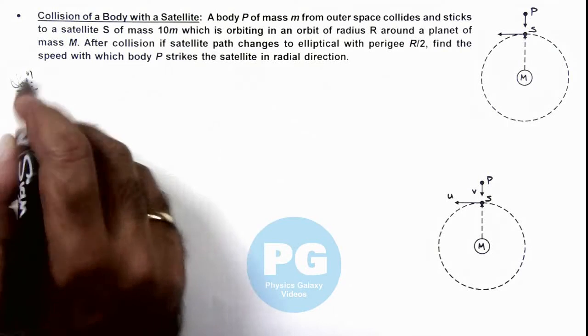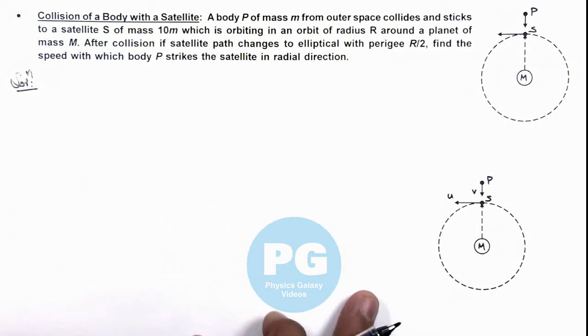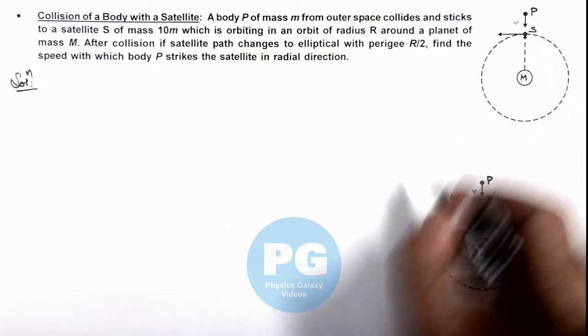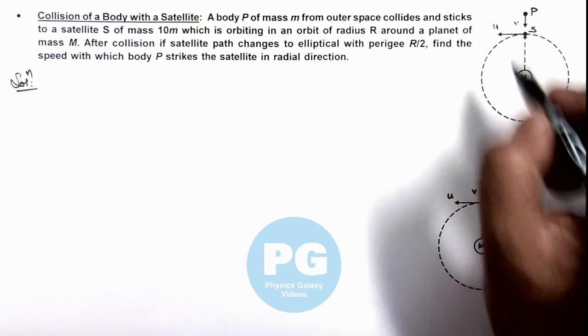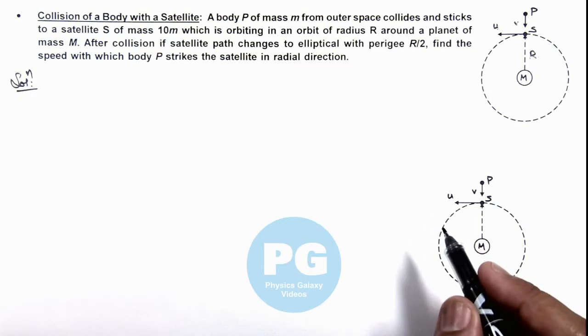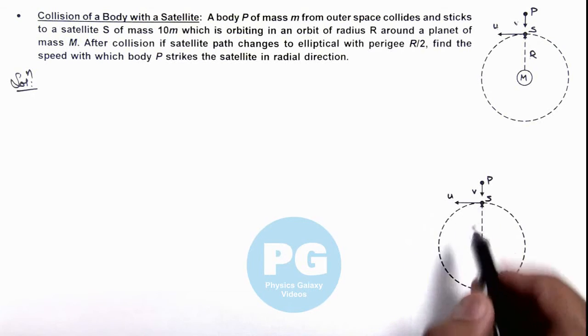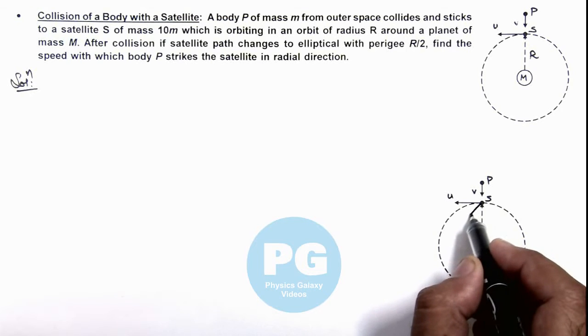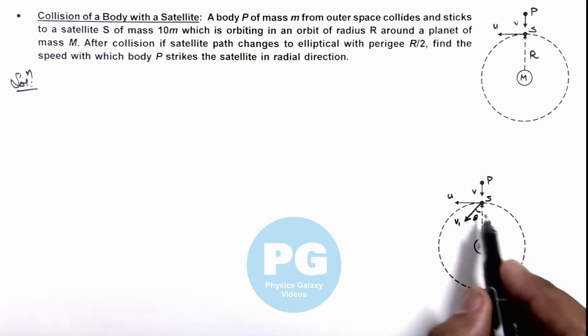Here to analyze the situation, we can discuss in this picture which we have redrawn. If body P strikes with the velocity v, we can consider this as v, and satellite speed is considered as u, which is orbiting in a circle of radius R. In this situation, we can see when it strikes, by conservation of momentum the combined body of mass 11m moves in this direction with the velocity v1 at an angle theta to the radial direction, and then it follows an elliptical path like this.